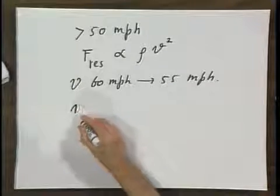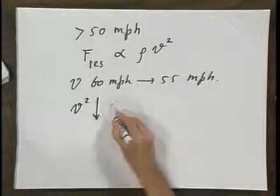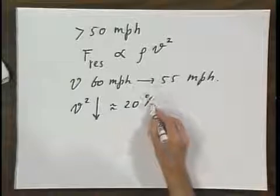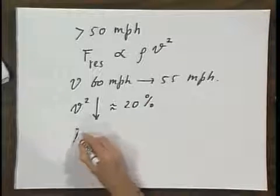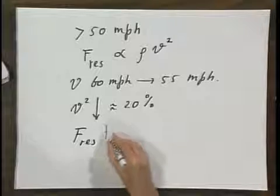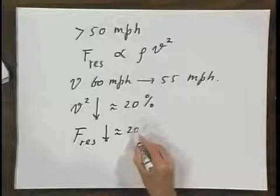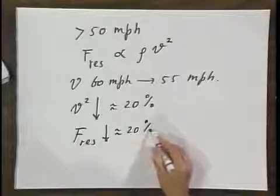So V squared goes down by roughly 20 percent. So that means that the resistive force goes down by approximately 20 percent.